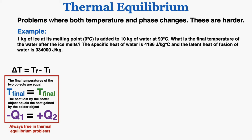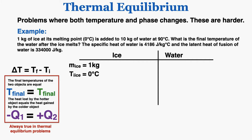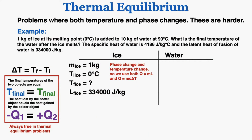Now one example where both temperature and phase change — these are definitely harder. One kilogram of ice at its melting point, zero degrees Celsius, is added to 10 kilograms of water at 90 degrees Celsius. What is the final temperature after the ice melts? The specific heat of water is 4,186 joules per kilogram degree Celsius and the latent heat of fusion is 334,000 joules per kilogram. The total heat added to the ice has two parts: the phase change term mL, plus the temperature change term mcΔT.